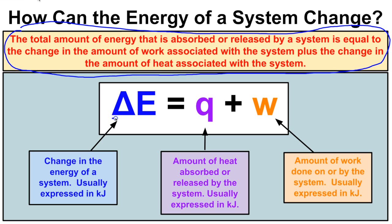To get the total change in energy of a system, we have to look at the amount of heat the system is absorbing or releasing, and the amount of work the system is doing on the surroundings or the surroundings is doing on the system. If we know these two things, we can easily calculate the change in the system's internal energy.